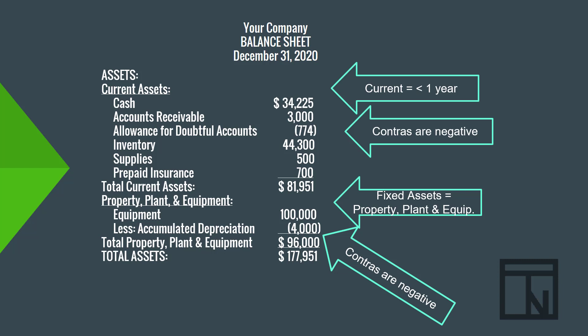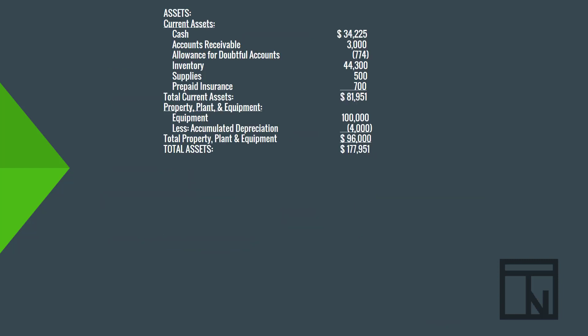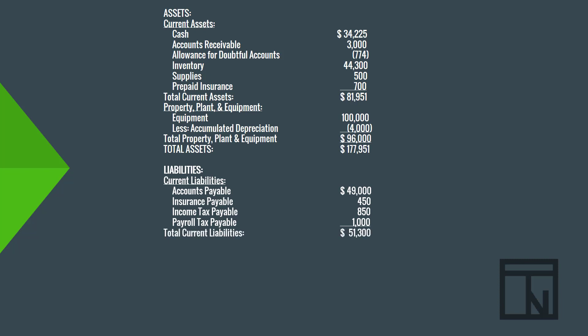Now that we have our assets section, let's work on liabilities. Just like assets, we have current liabilities — any debts we plan to pay back in less than a year. Examples include accounts payable and other short-term payables like insurance, income tax, and payroll tax. We write those out and total them. If you have long-term loans — five-year, ten-year, or thirty-year loans — those are long-term liabilities. For this course, we've just had one loans account, so we put that at the bottom of current liabilities. Total liabilities equals current liabilities plus loans.